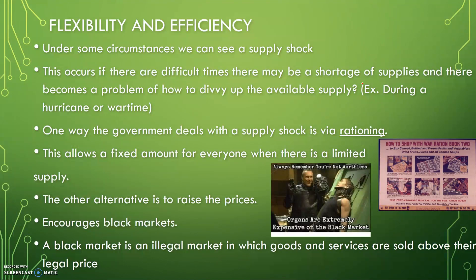One way the government deals with a supply shock is rationing — this relates back to history in World War I and World War II. Rationing allows a fixed amount for everyone when there is a limited supply. Those are the ration books: you'd take in your coupon book and get a certain amount of flour for the month, and that was it. The other alternative is to raise prices of select goods; however, that encourages black markets — an illegal market in which goods and services are sold above their legal price.